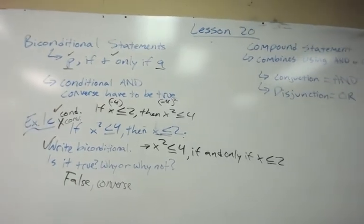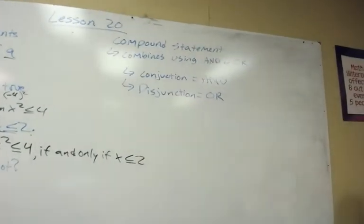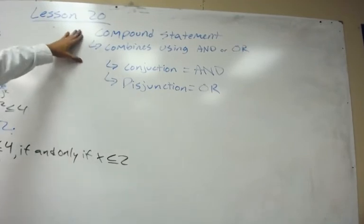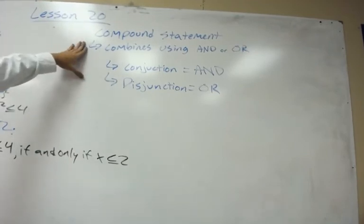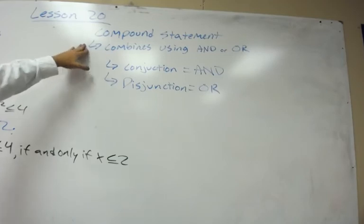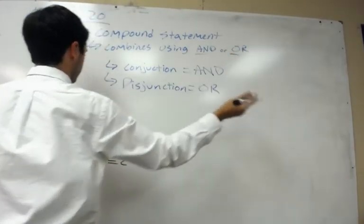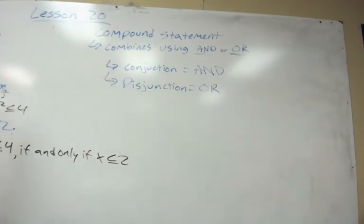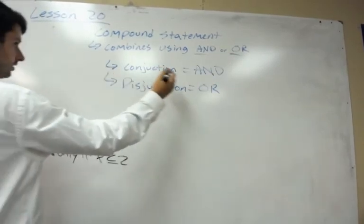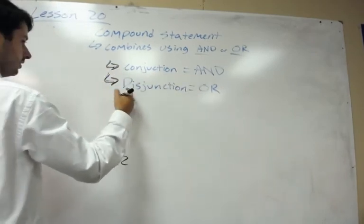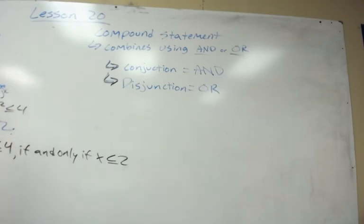One other thing, I'm not really going to spend any time on this. But just so you know this, I think you actually learned this in your English class. But compound statements, those are just statements that are combined using the words and or or. Those are compound statements. It's all this. And I'm not even going to do any problems with this. But a conjunction specifically uses and.